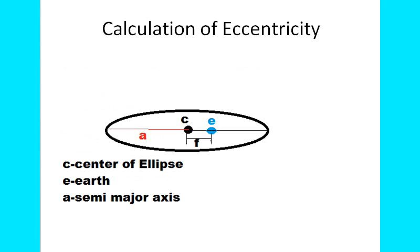This is just a picture to understand how to calculate the eccentricity. If you see, C is the center of the ellipse, that is the center of the orbit. The ellipse may be circular, or if eccentricity is equal to 0, it is circular.